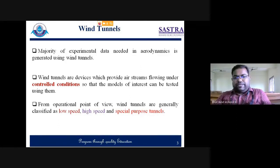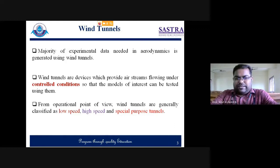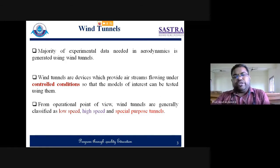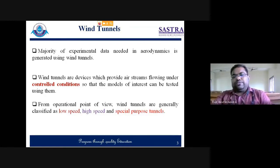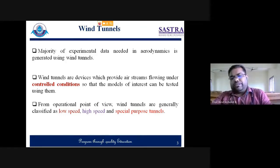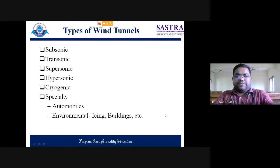From an operation point of view, wind tunnels are generally classified into two categories: low speed, high speed, and special purpose tunnels. Special purpose means we have automobile wind tunnels, and full-scale aircraft wind tunnels — NASA has a full-scale aircraft wind tunnel where a prototype can be tested directly instead of a scaled model. In our wind tunnel we test only reduced-scale models of a given type, but NASA has very large tunnels where full-scale prototypes can be tested. Similarly, automobile tunnels exist where the actual prototype of cars or trucks can be tested directly.